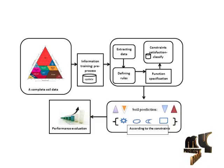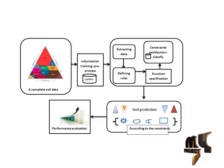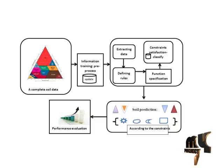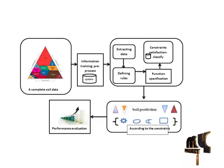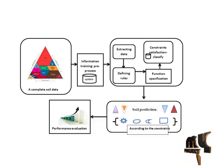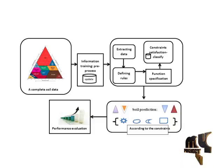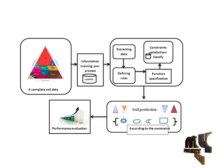Then it goes to constraint satisfaction — classify, then go to constraint satisfaction, then to soil prediction. According to the content, soil prediction is used to do some process, then view the soil details. Then go to performance evaluation to compare performance after predictions.